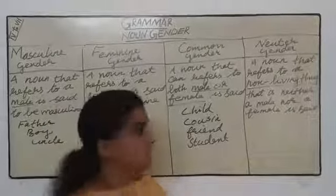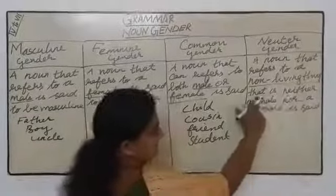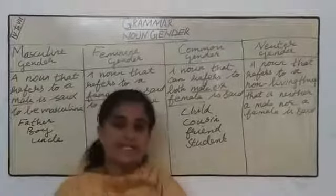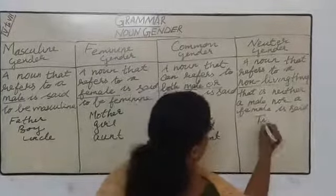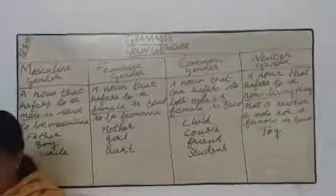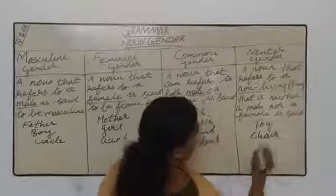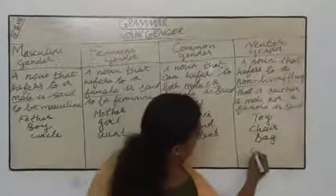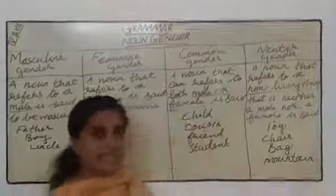Neuter gender noun — this is a noun that refers to a non-living thing; that is, neither a male nor a female. It is said to be a neuter gender noun. Some examples are: toy, chair, mountain. These are the examples of neuter gender noun.